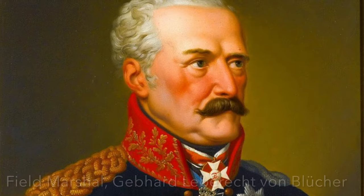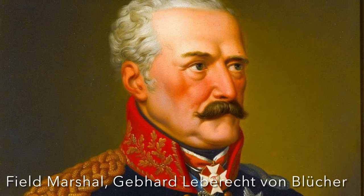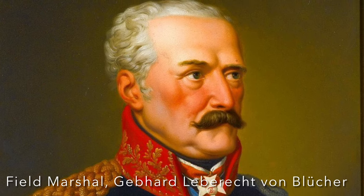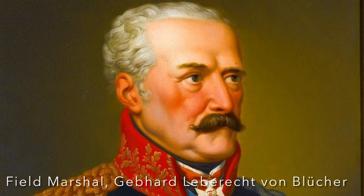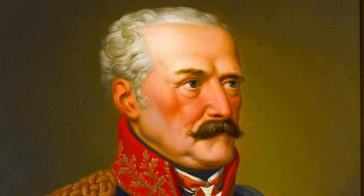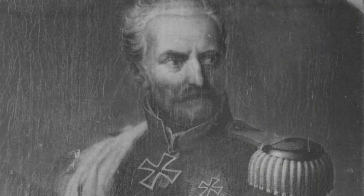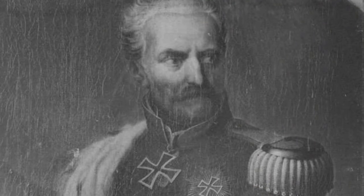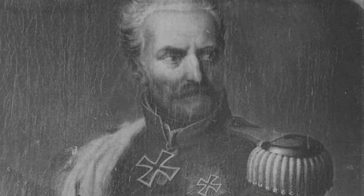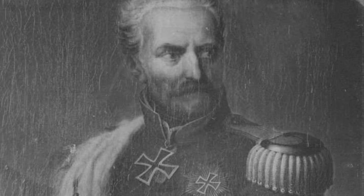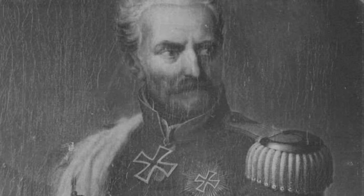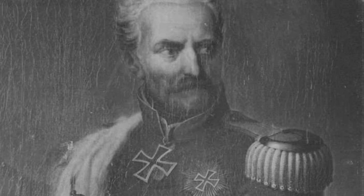Field Marshal Gebhard Lebrecht von Blücher was a Prussian military commander who played a crucial role in the defeat of Napoleon at Waterloo. Known for his aggressive and impulsive tactics, Blücher's timely arrival with Prussian reinforcements bolstered the Allied forces and contributed to Napoleon's downfall.